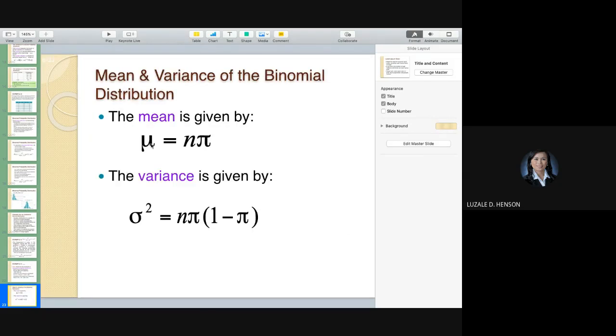If you're going to compute for the mean of the binomial distribution, it's just equal to n times pi. Variance is n times pi times 1 minus pi. Remember, pi is the probability of success and this is the probability of failure. And the standard deviation is just the square root of the variance.